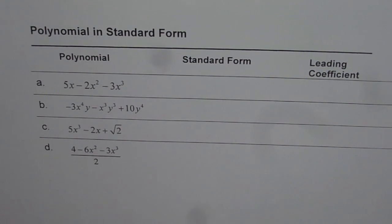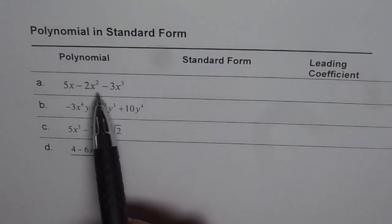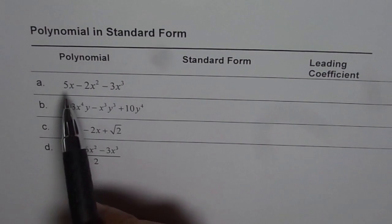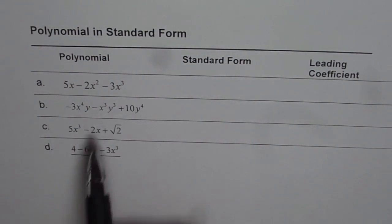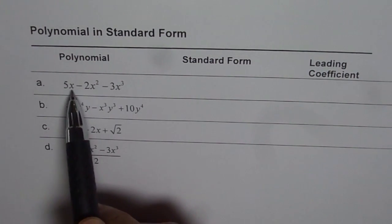Let's start working on these polynomials. The first one is 5x minus 2x squared minus 3x cubed. There are three terms in this polynomial. The third term has a degree of 3, second has 2, first is 1.